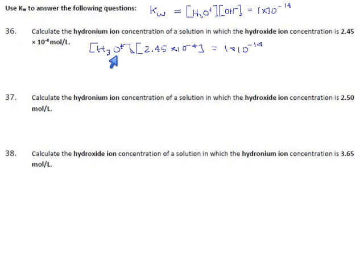So if we want to solve this for H3O, we divide by the concentration of OH. So the H3O concentration is 1 times 10 to the minus 14 divided by 2.45 times 10 to the minus 4. And out come the calculators, 2.45 times 10 to the minus 4.